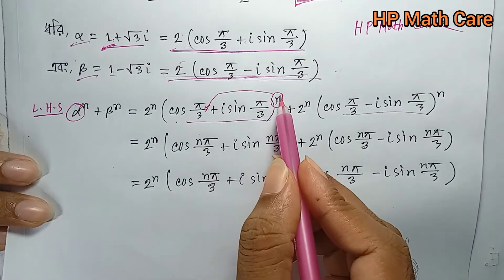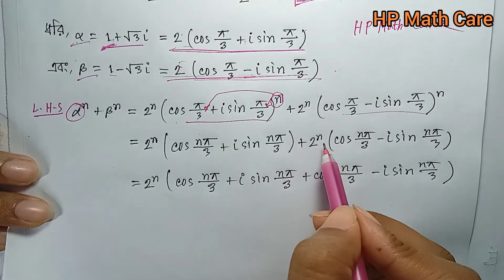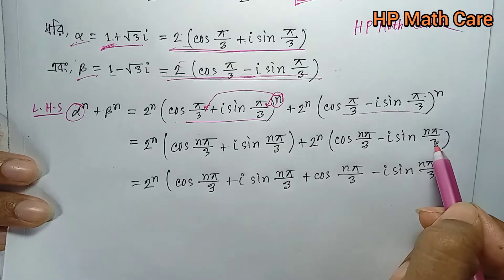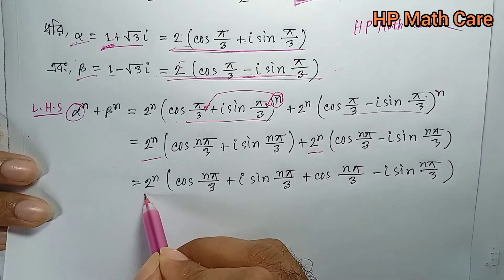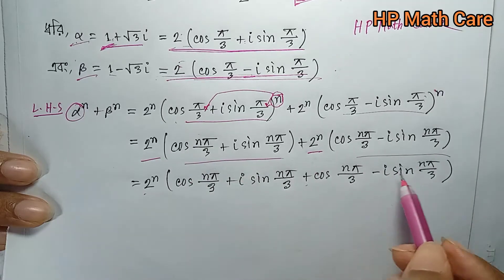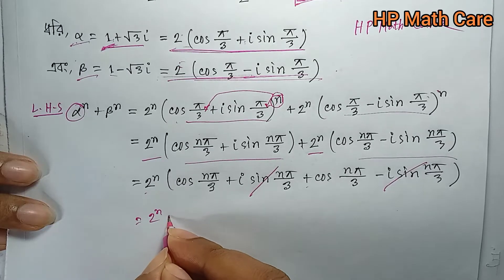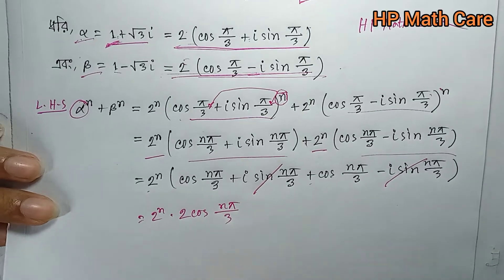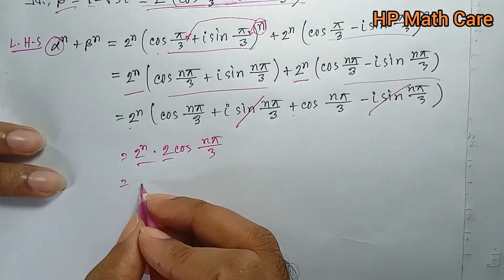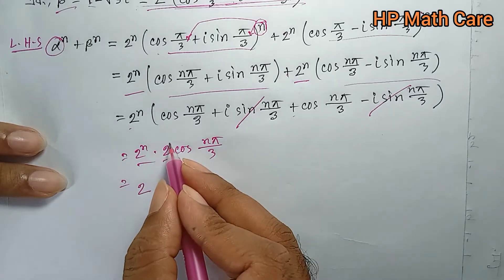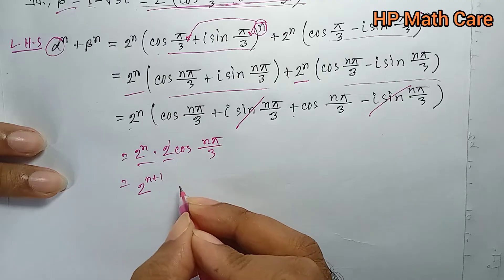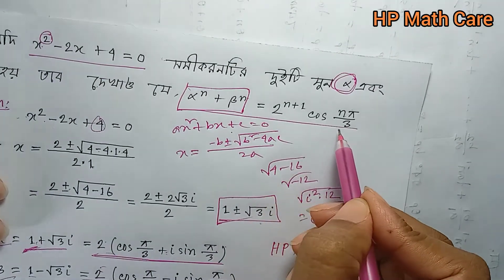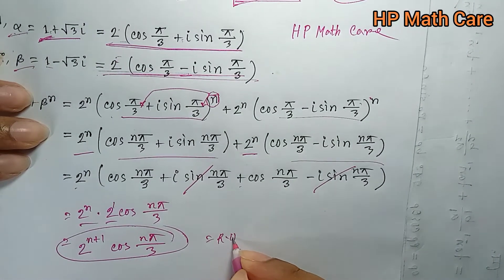Alpha to the power n: this equals cos(nπ/3) plus i sin(nπ/3), and beta to the power n gives cos(nπ/3) minus i sin(nπ/3). Adding these together gives 2 to the power n times 2 cos(nπ/3), which equals 2 to the power n plus 1 times cos(nπ/3). This is the right hand side, confirmed by De Moivre's theorem.